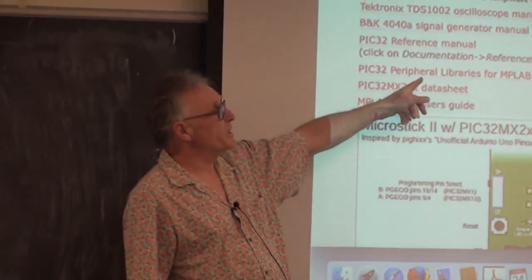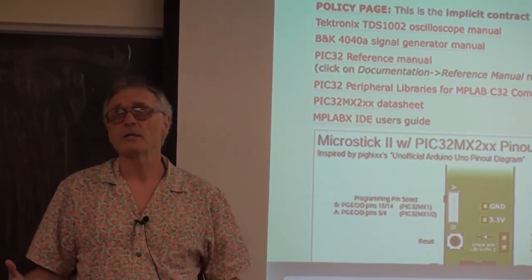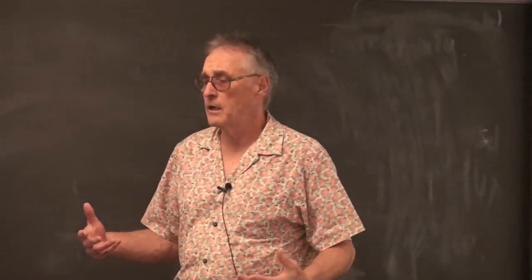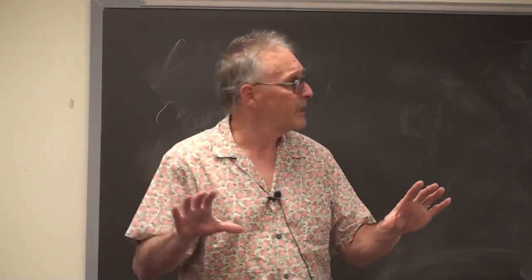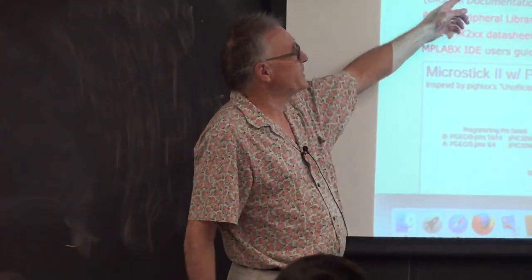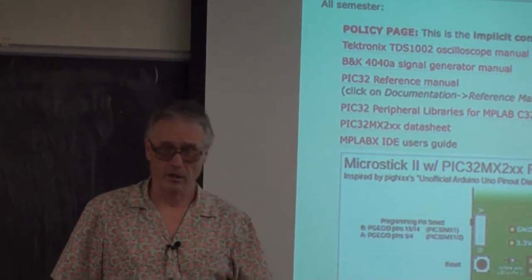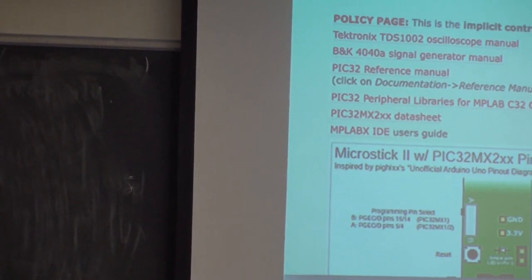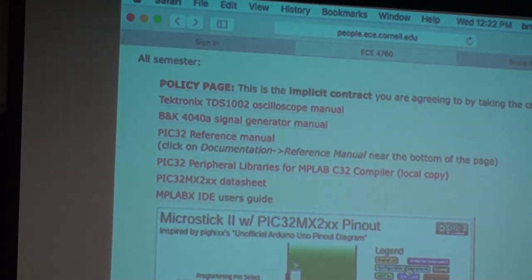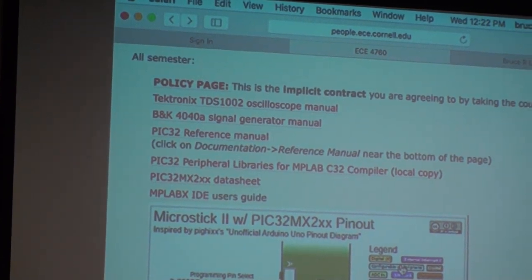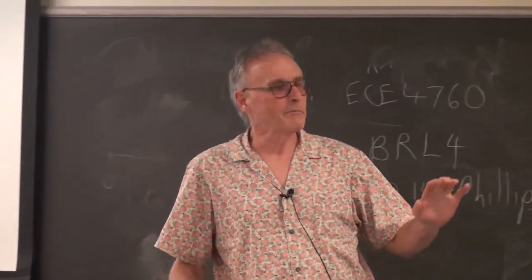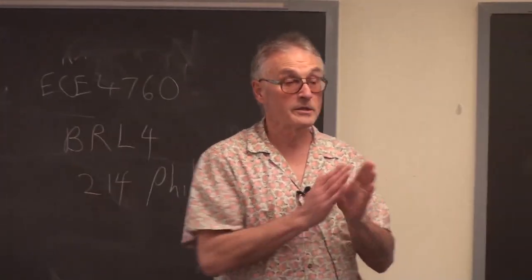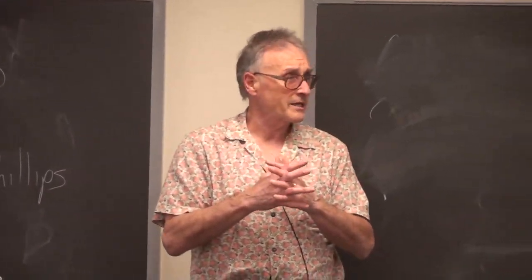The peripheral libraries which is the set of mostly macros and some functions that abstract the registers into C-friendly syntax and the PIC32 reference manual which is a monster, it's about 1300 pages and describes in detail how every peripheral on the chip works including the timer. There's five timers, the output compare units, the input capture units, and probably the most complicated peripheral which is also of course therefore the coolest is the direct memory access controller.